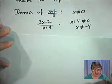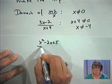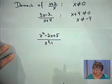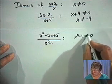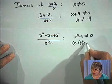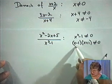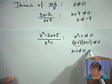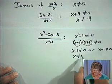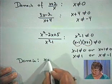Let's do one more example: x squared minus 2x plus 5 over x squared minus 1. We don't want x squared minus 1 to equal 0, because that would make the expression undefined. We can factor x squared minus 1 as (x minus 1)(x plus 1). We don't want either factor to be 0, so x minus 1 cannot equal 0 and x plus 1 cannot equal 0. Therefore x cannot be 1 and x cannot be negative 1. The domain is all values except x equals plus or minus 1.